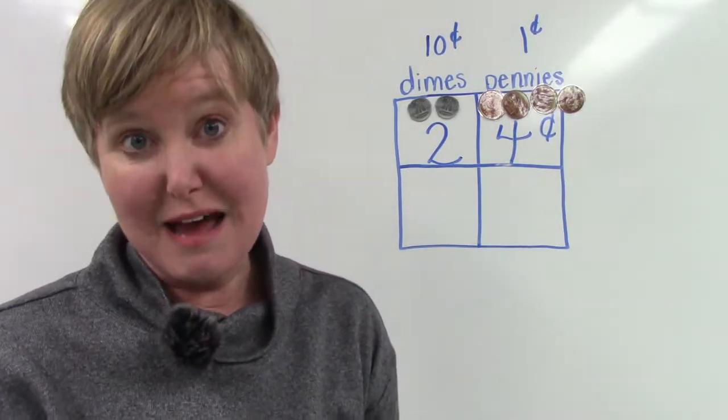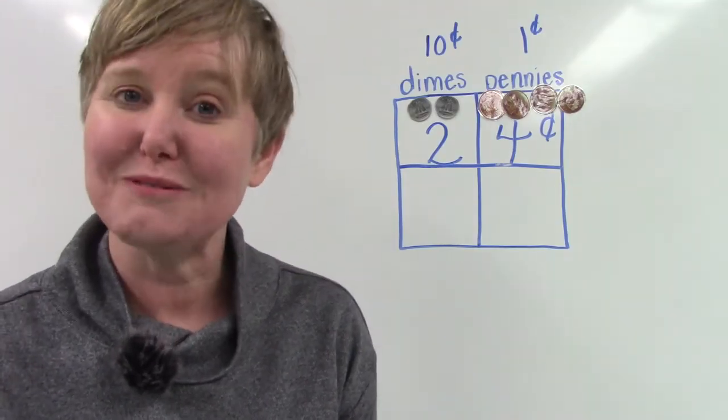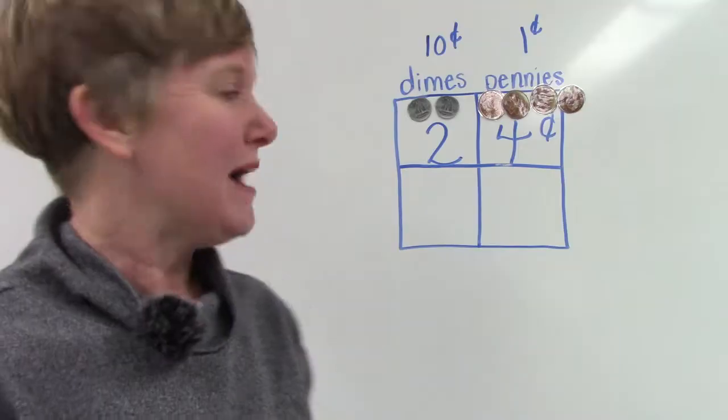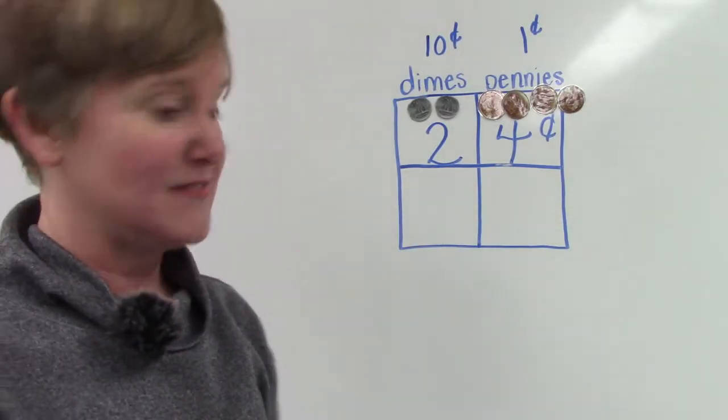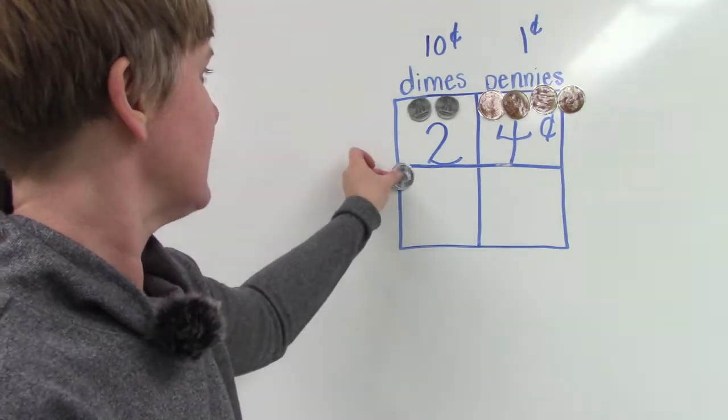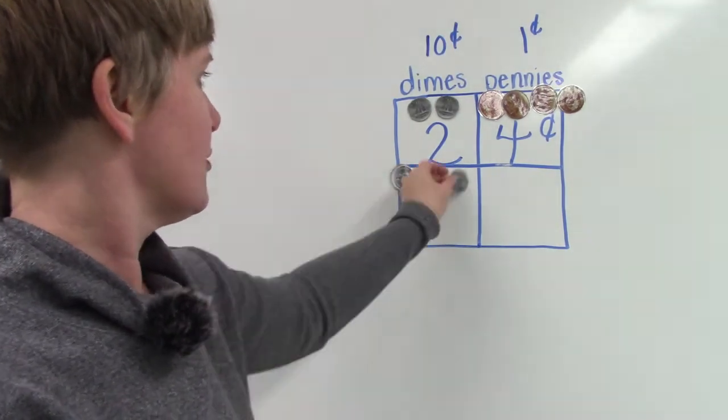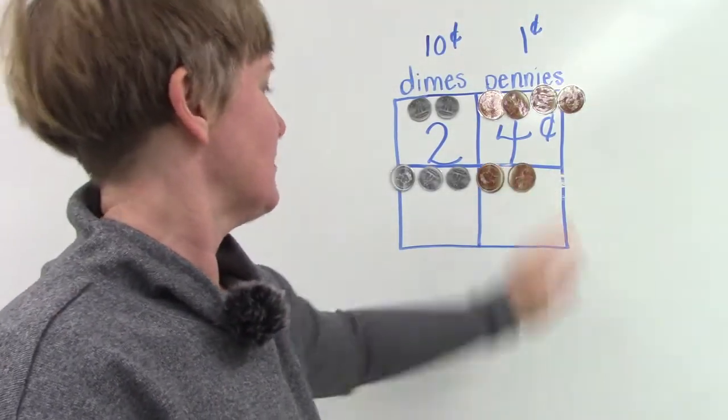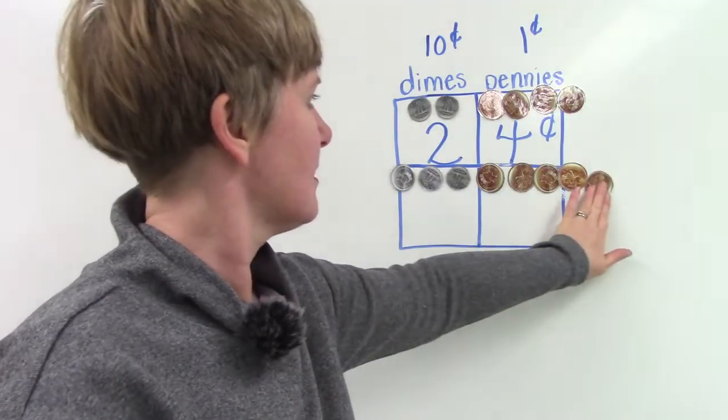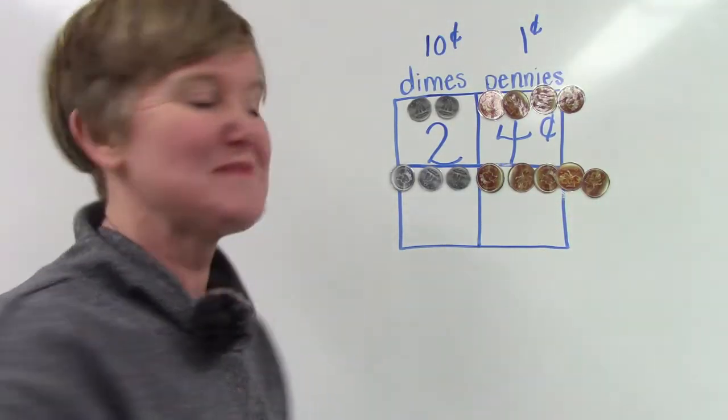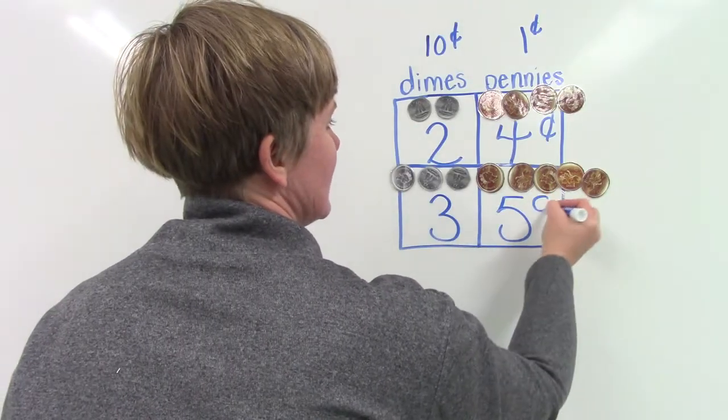When we count by dimes, we count by 10. And when we count pennies, we count by one. All right. Well, if we have 24 cents and we add 35 cents to that, see we have 10, 20, 30, 31, 32, 33, 34, and 35. I'm going to write that down, 35 cents.